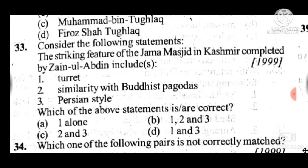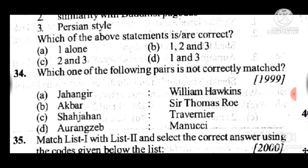Question 34: Which one of the following pairs is not correctly matched? Answer is B — Akbar and Sir Thomas Roe; it is incorrectly matched. The rest are correctly matched.